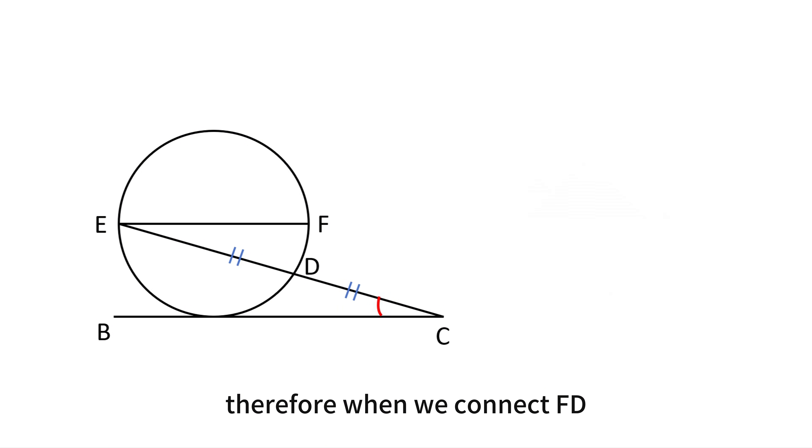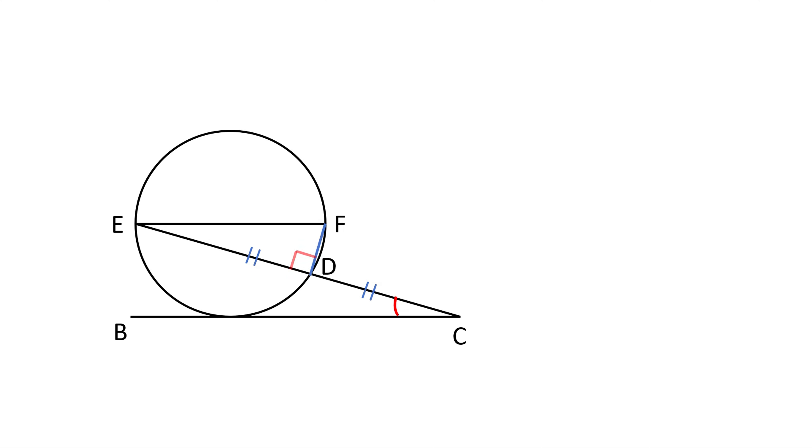Therefore, when we connect FD, angle FDE must be 90 degrees. Now, because DC equals DE, and FD is perpendicular to CE, FD acts as the perpendicular bisector of segment CE.